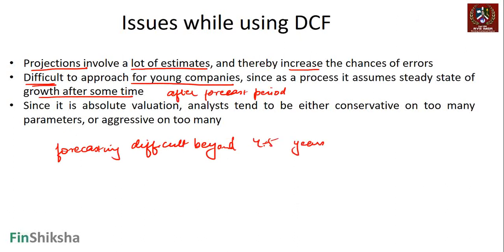If you were to project the revenues of a company in the year 2030, it is very difficult — how would you base your judgment on it? Also, since it is an absolute valuation, analysts tend to be either conservative on too many parameters or aggressive on too many parameters.